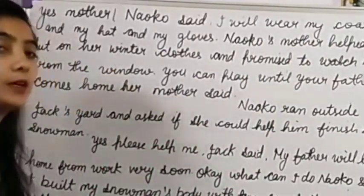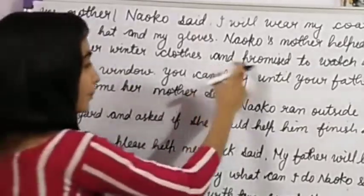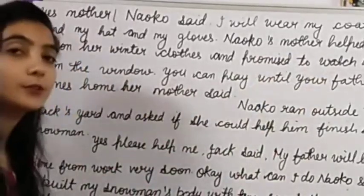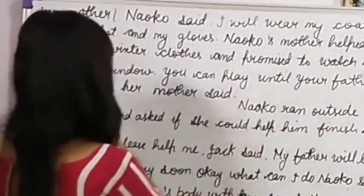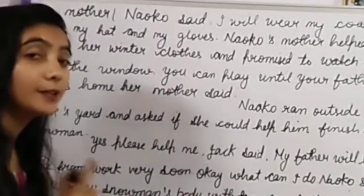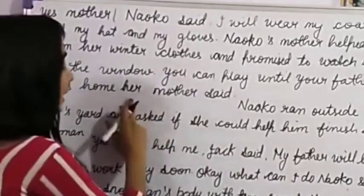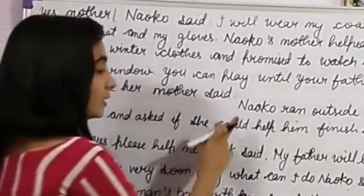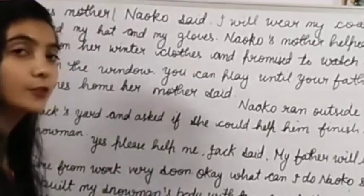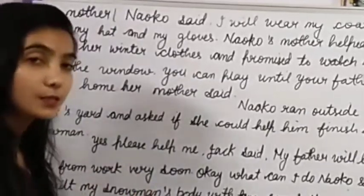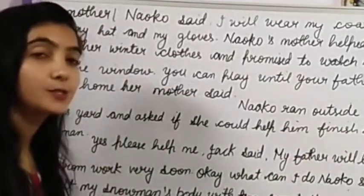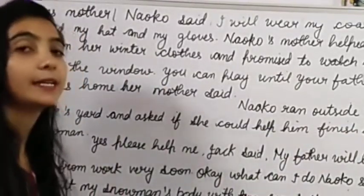Naoko's mother helped her daughter put on her winter clothes and promised to watch her from the window. She also gave an instruction: 'You can play until your father comes home.' Naoko ran outside to Jack's front yard where Jack was making the snowman, and asked if she could help him finish it.